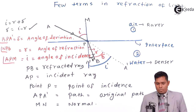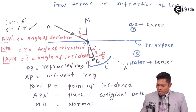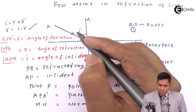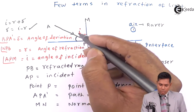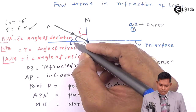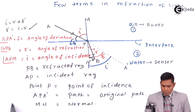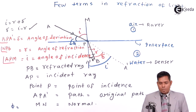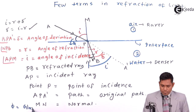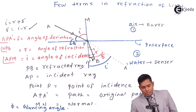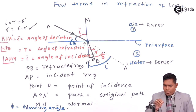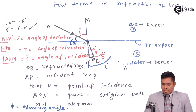One more angle is also defined here. Suppose this angle is called Phi — the glancing angle. The glancing angle is the angle between the incident ray and the surface.